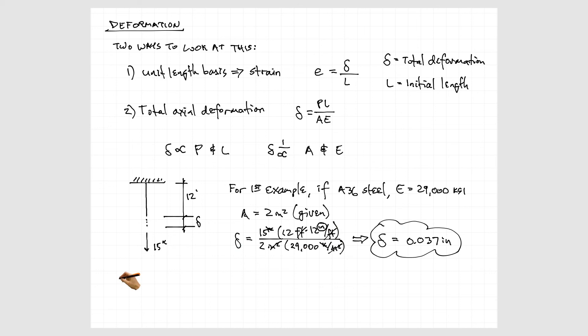The total deformation is 15 kips multiplied by our length, 12 feet, and we need to multiply that again by 12 inches per foot to convert to inches, divide that by the cross-sectional area, 2 square inches, divide that by the elastic modulus of 29,000 ksi, and we get a total deformation of 0.037 inches.